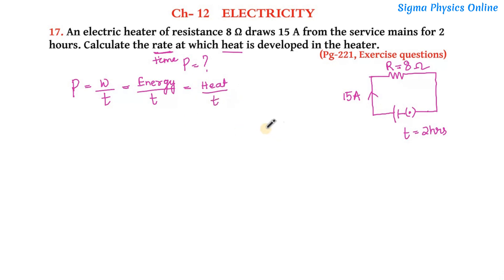Or it is also defined as the rate at which heat is developed or dissipated. So when it's asking us to find out the rate at which heat is developed, that means it's basically asking us the power of this heater. To find out the power, we have to find the rate at which heat energy is developed.